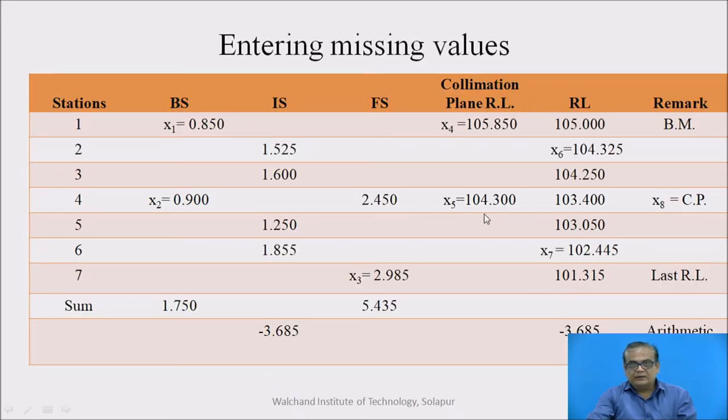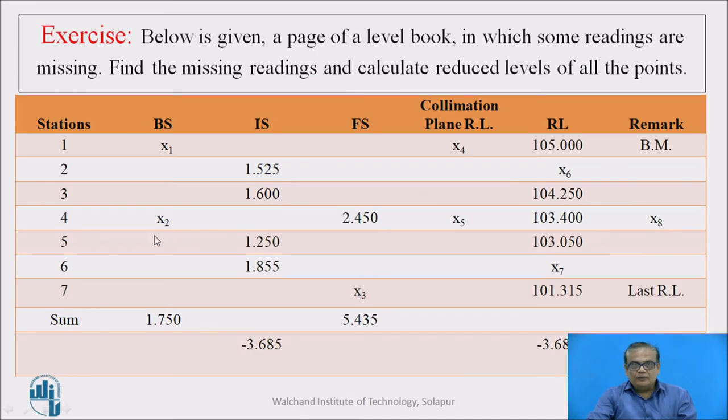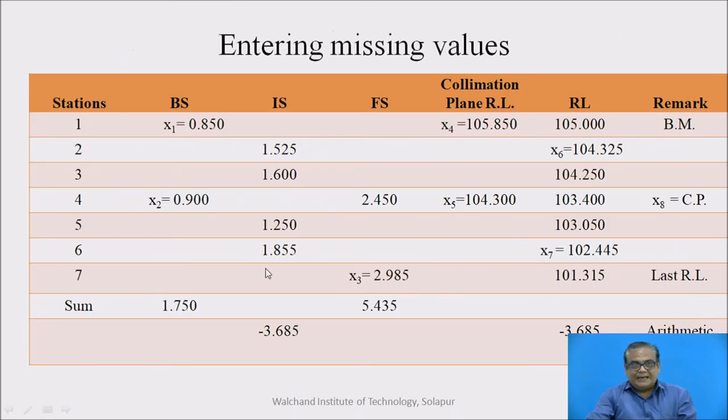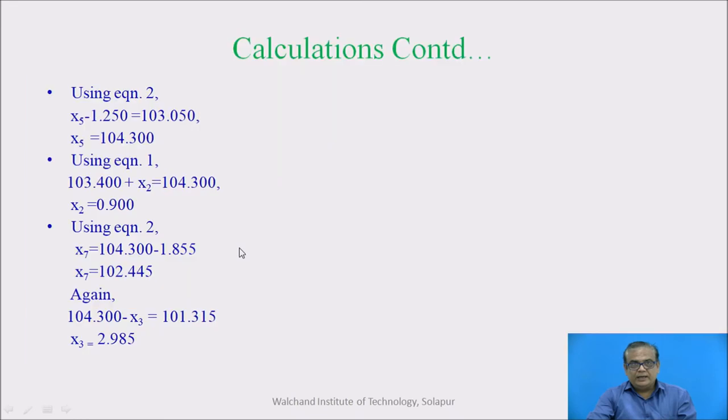So enter it here, x5, collimation plane RL. Once you have got new collimation plane RL, finding x2 which is unknown missing. So again, it is easy one. You know RL of station plus backside reading gives us collimation plane RL. So here this x2 only will be unknown and we will get that value also x2 is 0.900.